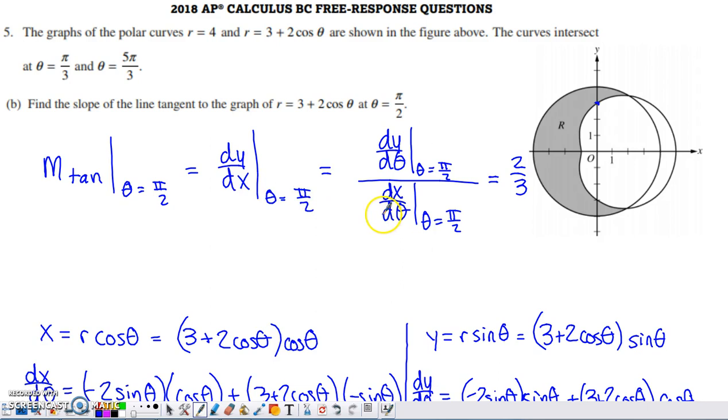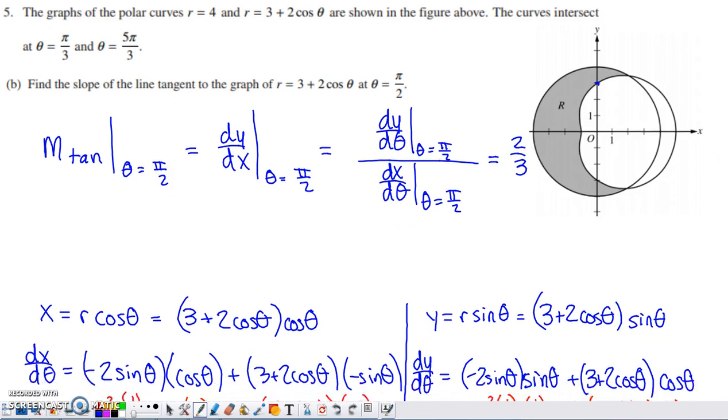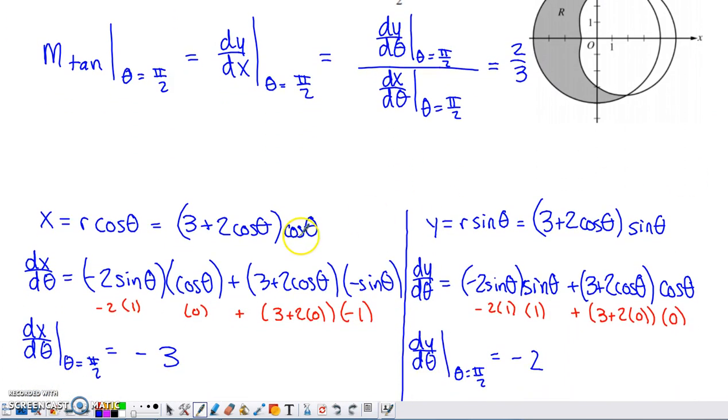If you've dealt with polar coordinates before, you find dy/dx by taking dy/dθ and dividing by dx/dθ at the appropriate theta value. I already have the answer specified here: 2/3, but I had to do work at the bottom of the screen to find it. The relationship between x, r, and theta for any polar curve is x equals r cosine theta. Similarly, y equals r sine theta. I had to replace r with the specific formula for the curve, which was 3 plus 2 cosine theta. I did that for both x and y relationships.